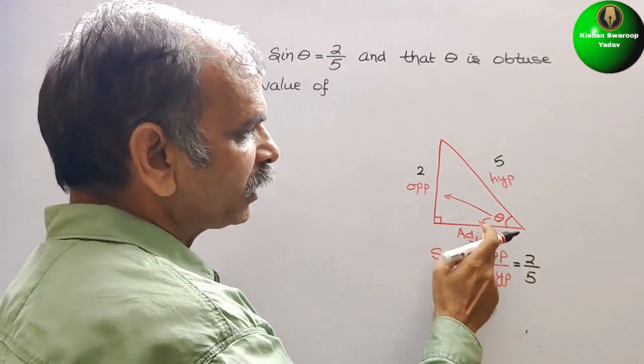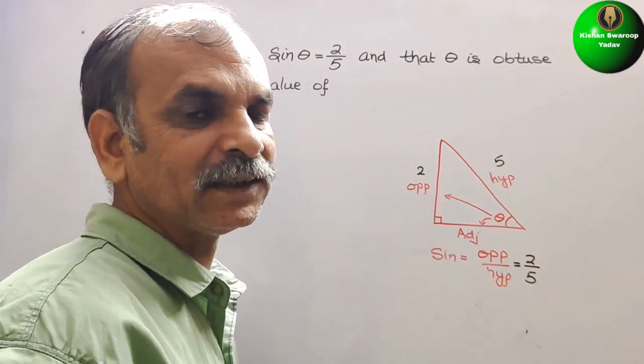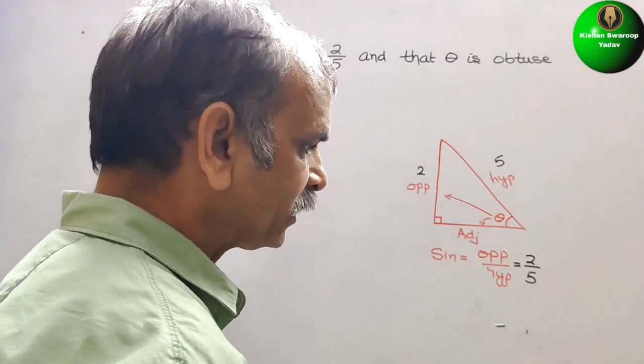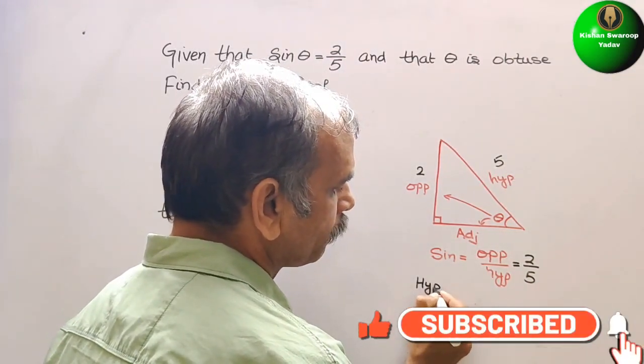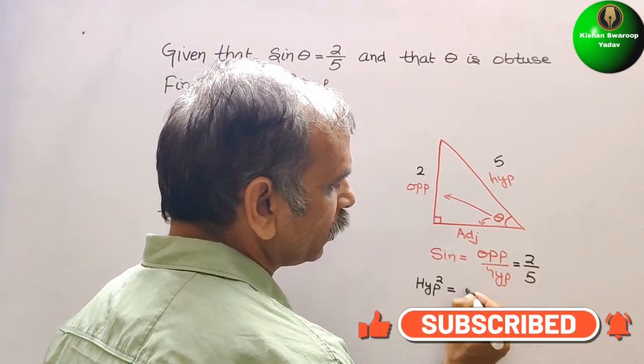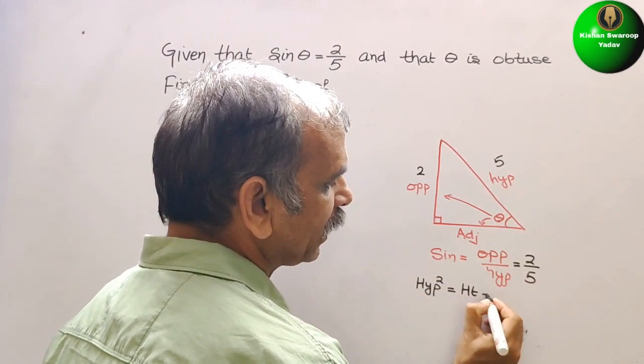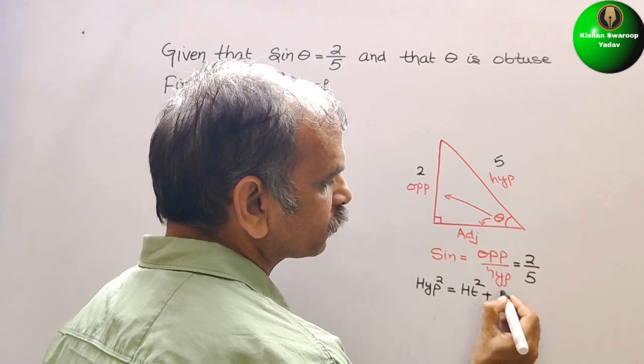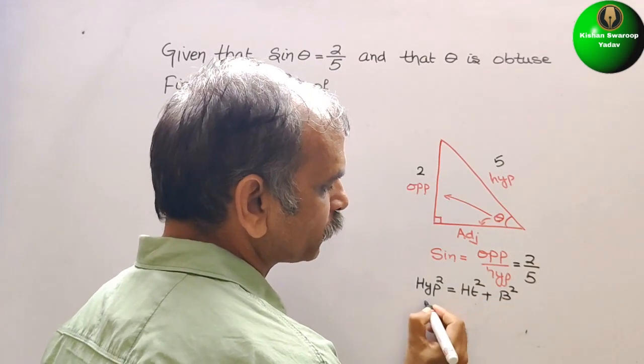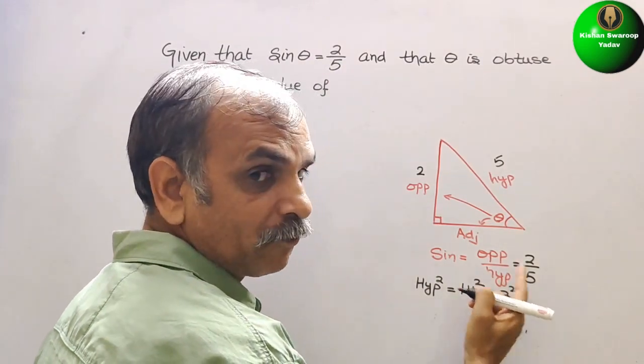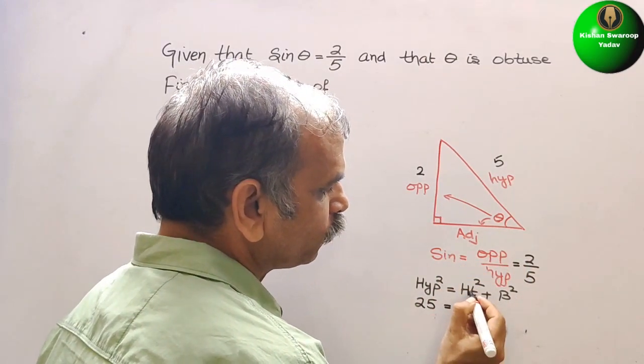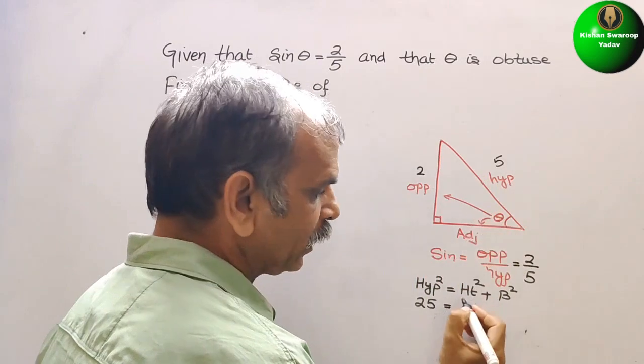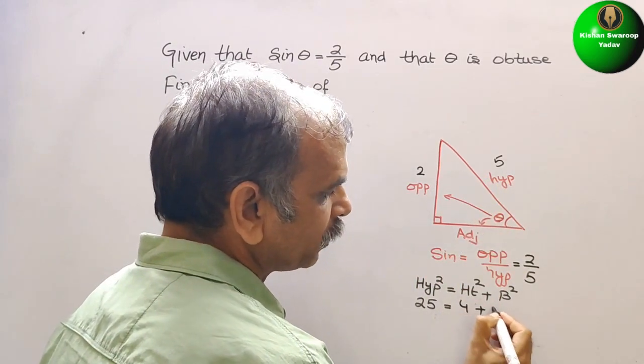So first we will find out what is our adjacent by Pythagoras theorem. So Pythagoras theorem is hypotenuse square is equal to height square plus base square. Now, substitute the value, so hypotenuse is 5, so 5 square is 25, is equal to height square, that means 2 square is 4 plus base square.